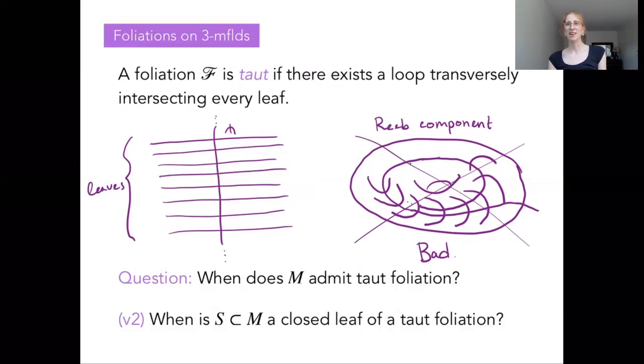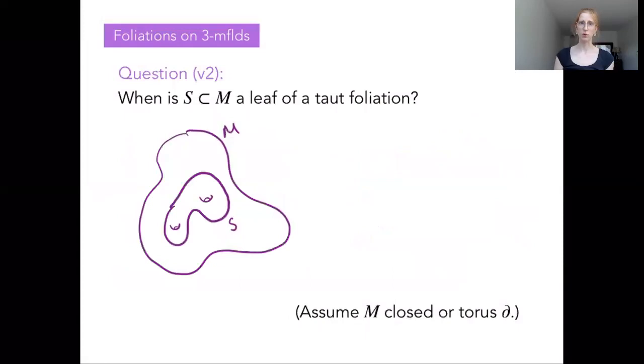This is bad, and we can say immediately that if we have a taut foliation, we can't get any of these components. That said, this doesn't really give a lot of insight into what our taut foliation looks like. And so a basic question you can ask is, when can you actually find taut foliations? Which three manifolds admit taut foliations, and what do they look like?